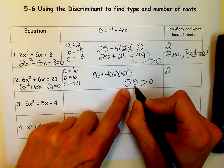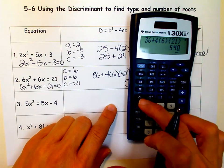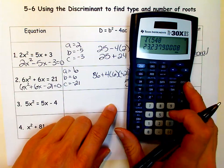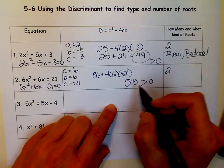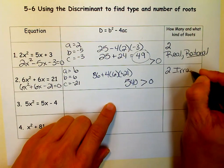It's not a perfect square. 540 is not a perfect square. If you weren't sure, you could find the square root of 540 in your calculator. And it's 23 point something. So you know that it's not a perfect square. So that means we have two irrational roots.